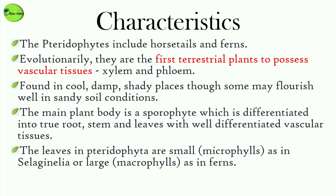Pteridophytes are found mainly in cool, damp, and shady places, although they can also be seen in sandy soil conditions. In pteridophytes, the main plant body is a sporophyte, which is differentiated into true roots, stem, and leaves. These organs possess well-differentiated vascular tissues — xylem and phloem.